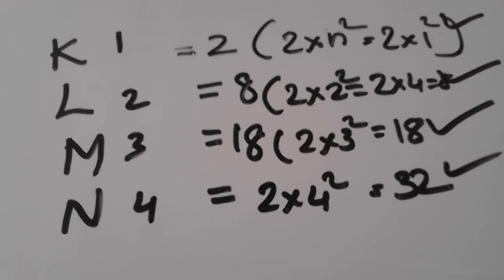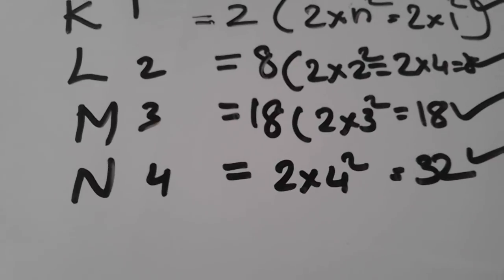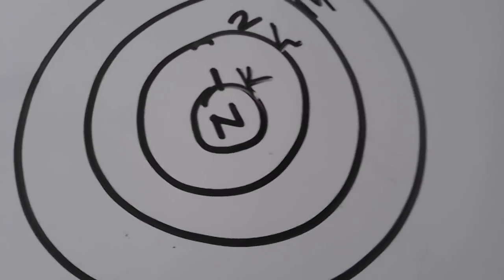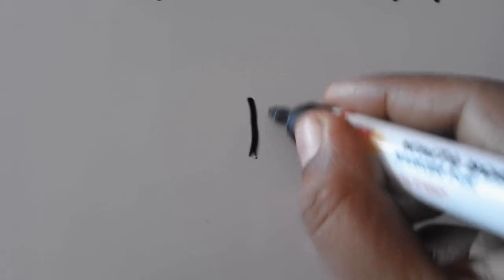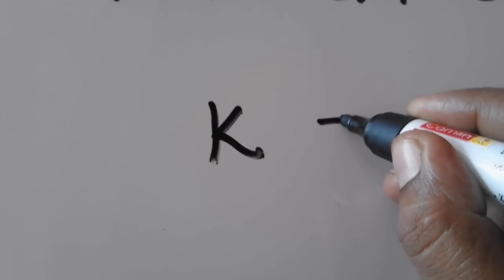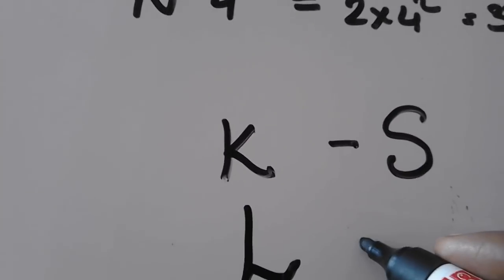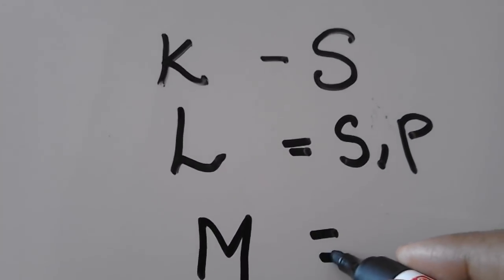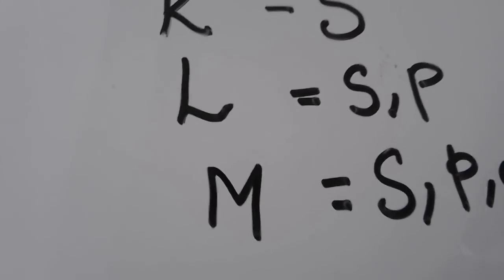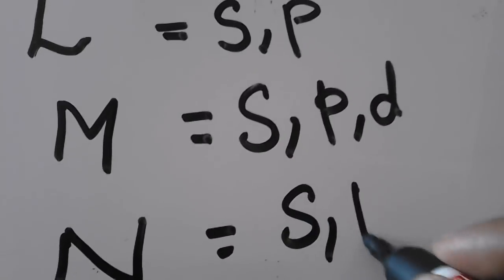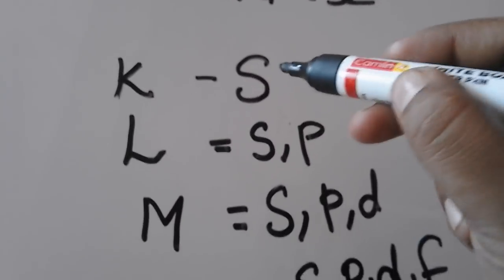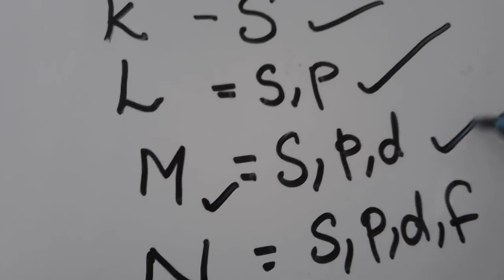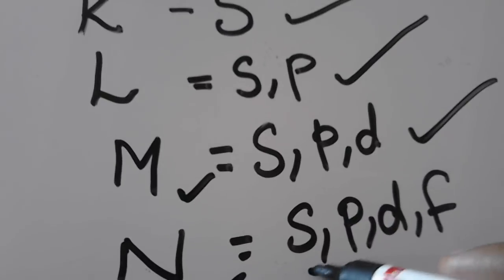This is the nucleus. The shell number is 1, 2, 3, 4. The shells are K, L, M, N. The shell number is S, P, D. D is the subshell. K, L, M, N are the subshells — S, P, D, F.